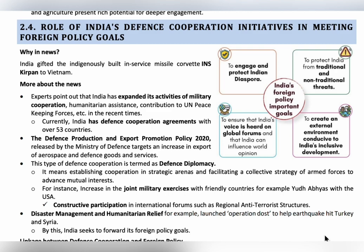India has several important foreign policy goals. The first is to protect the Indian diaspora — Indian citizens living in other countries. Since our people are present in other countries, we have to maintain friendly relations with those nations to engage and protect them. Another goal is to protect India from traditional and non-traditional threats. Traditional threats include terrorism and smuggling, while non-traditional threats involve other types of crimes.